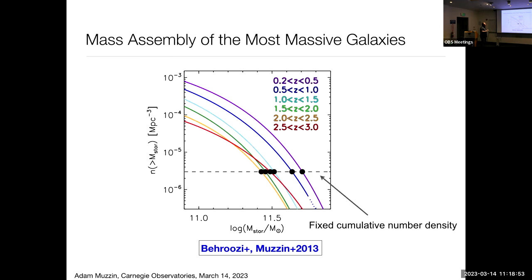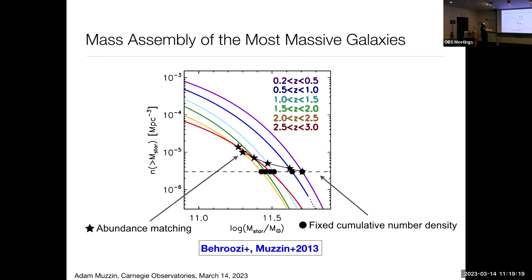For massive galaxies, instead of using a fixed cumulative number density, you use a slightly higher number density as you go to higher redshift to account for mergers removing galaxies from your sample. Over short redshift baselines the correction is not that big, but as you go to a very large baseline, this correction starts to become a little bit higher.